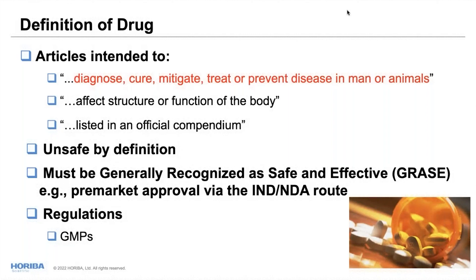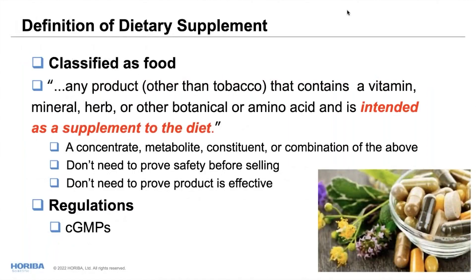Clinical trials and so forth are required to show a drug is safe and effective. The key regulations are the GMPs, specifically for pharmaceuticals, which are similar to food GMPs but more intensive in terms of testing. Next we go to dietary supplements — where do they fit in? In 1994, DSHEA was passed — the Dietary Supplement Health and Education Act.